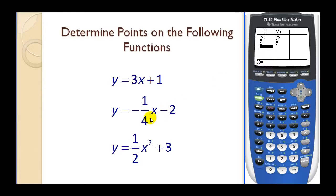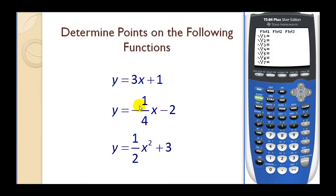Now let's take a look at our second linear function, y equals negative one-fourth x minus two. We'll press y equals and clear this one out. I chose this example because it's important that when we have a fractional slope, we include it in a set of parentheses. So we'll type open parenthesis, negative one divided by four, close parenthesis, and then x minus two.